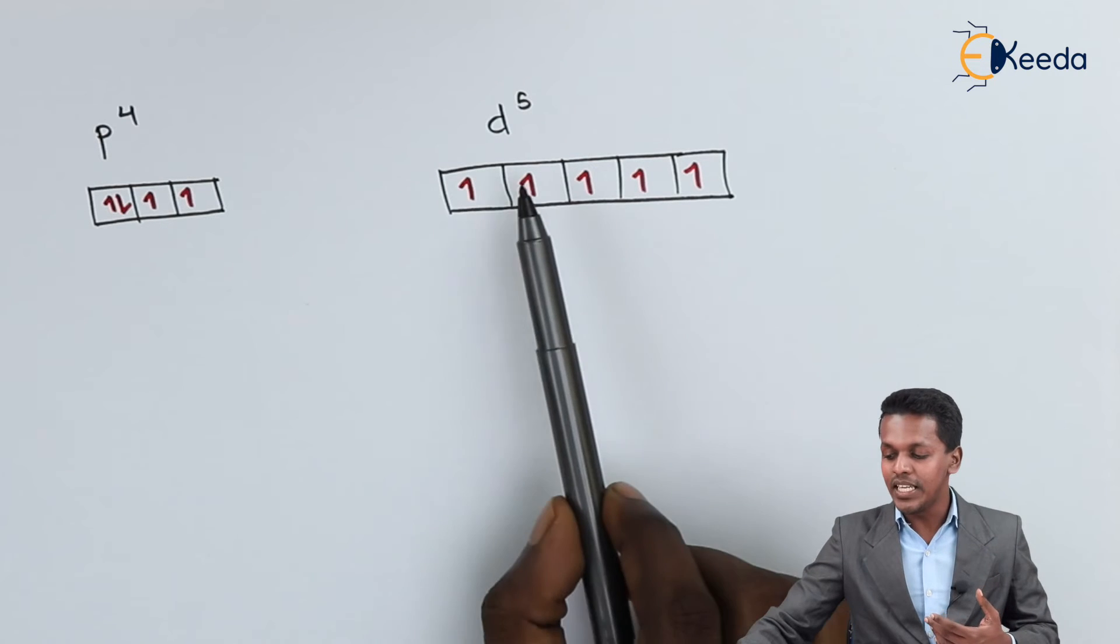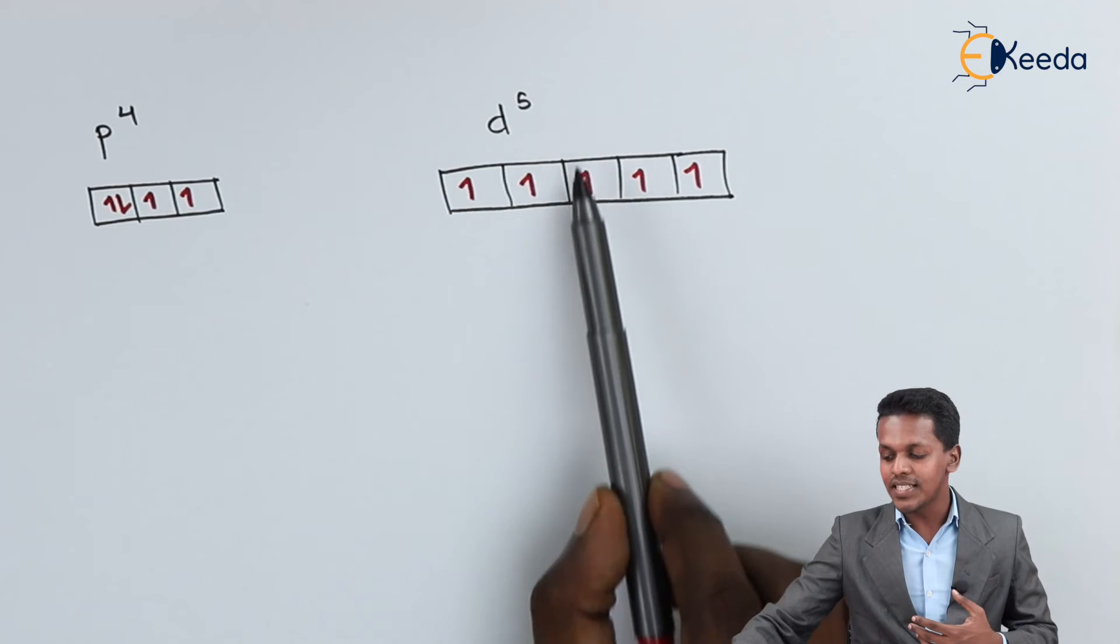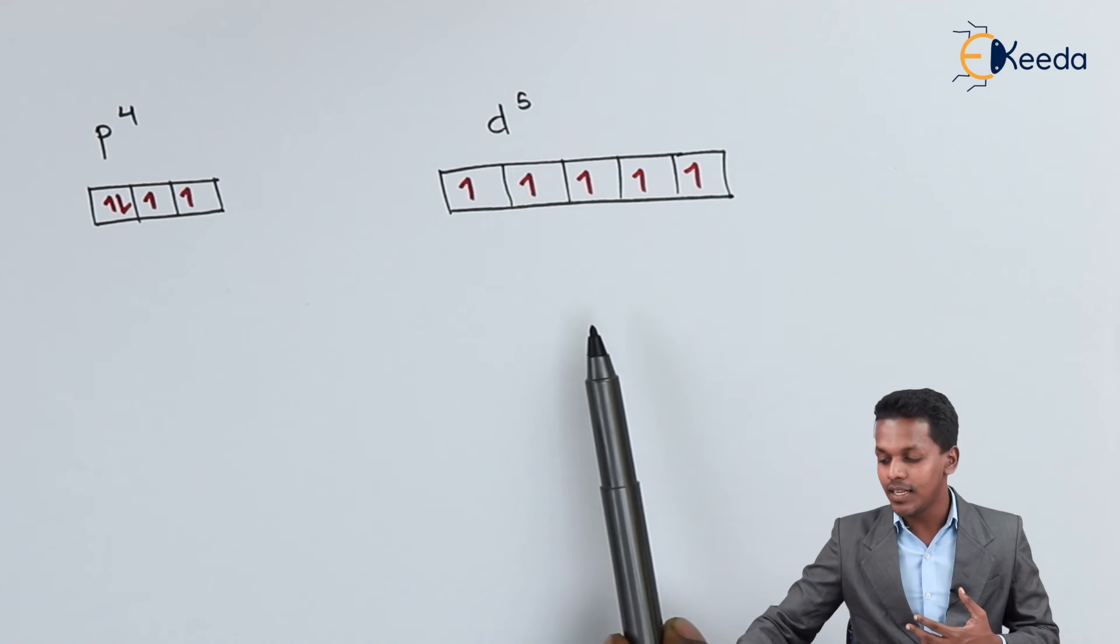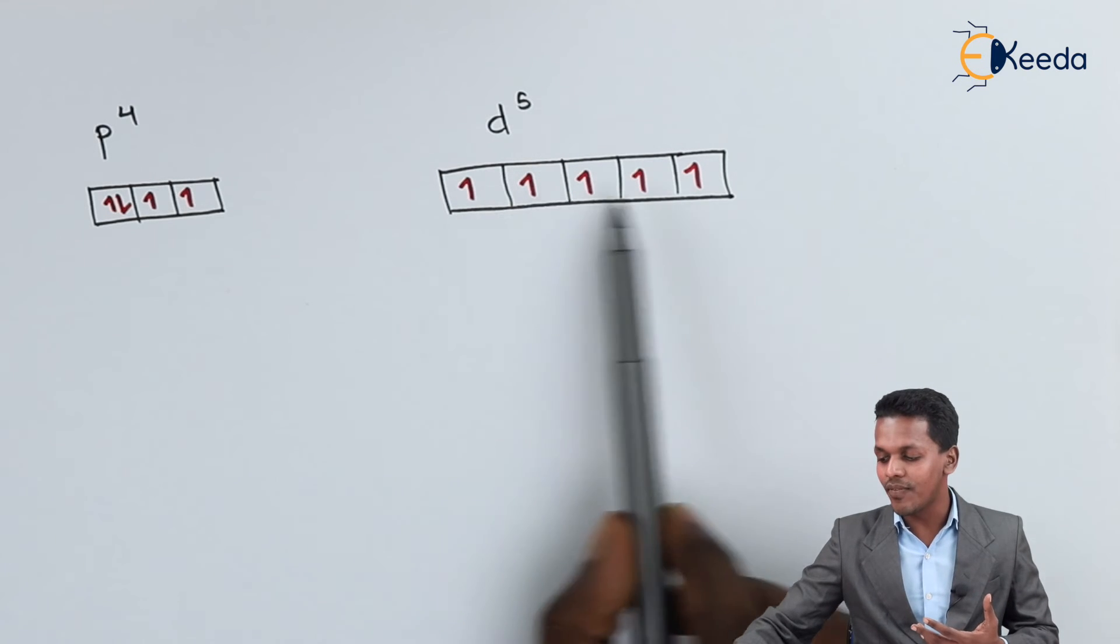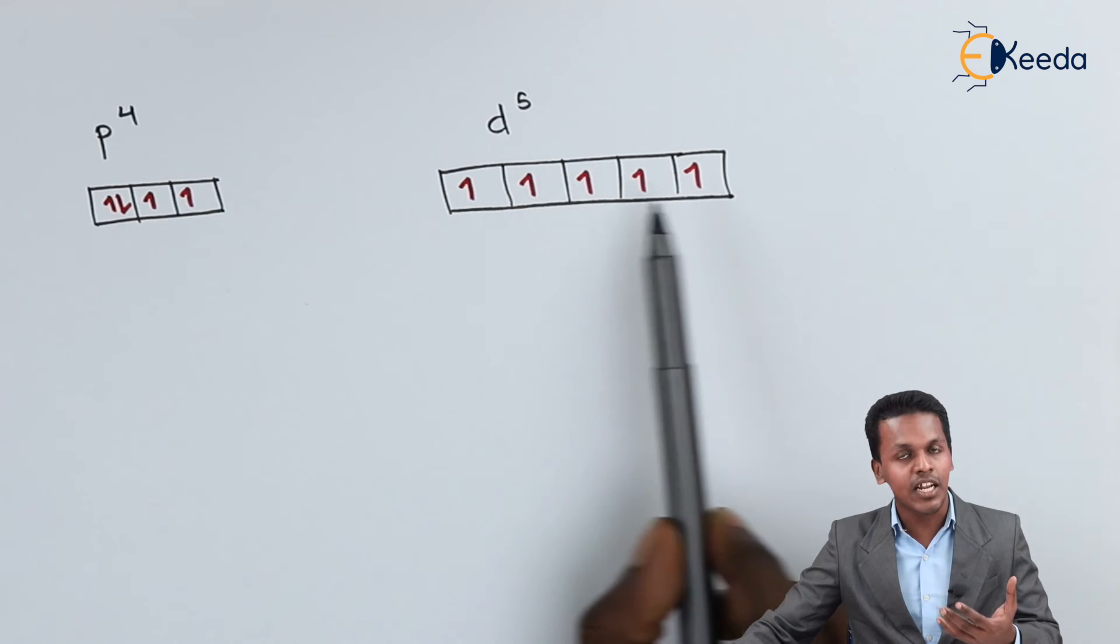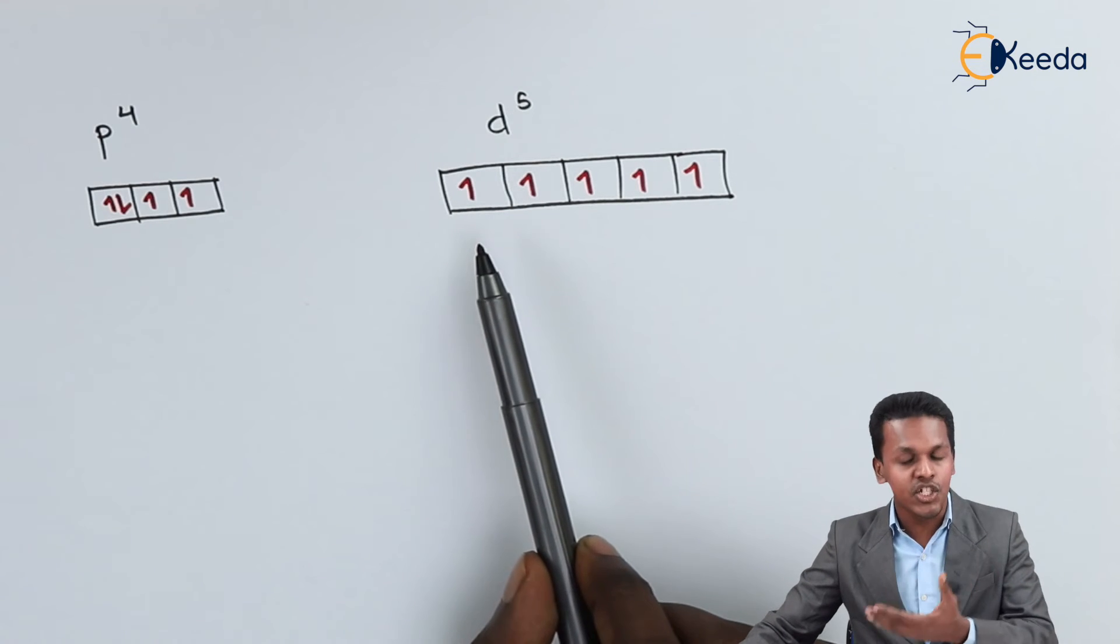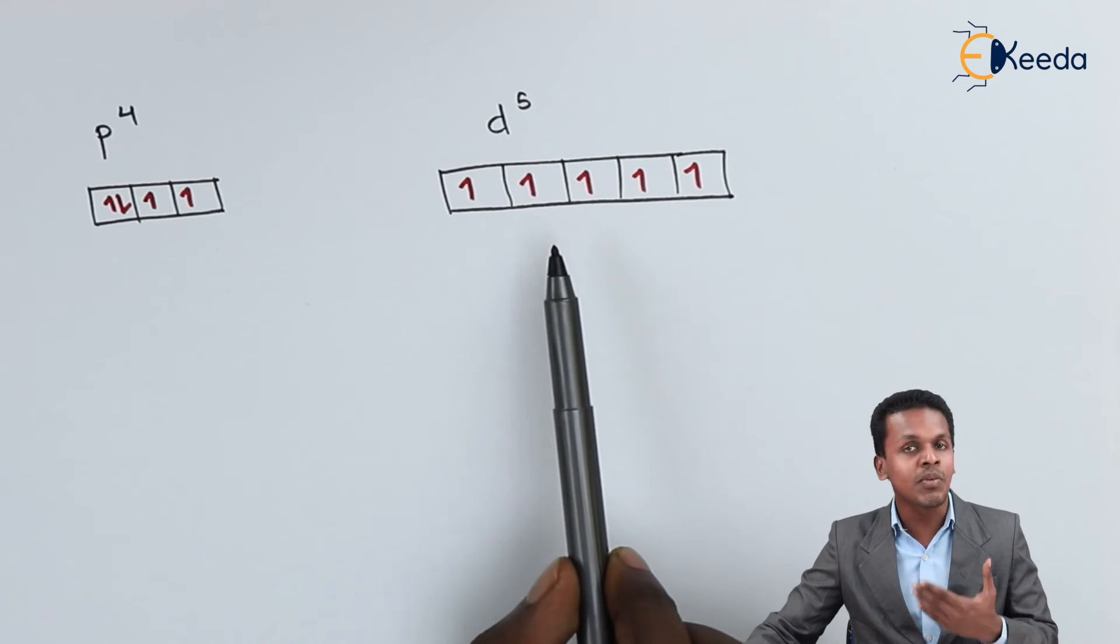So let me talk about d^5. The d^5 as we can see is a very symmetrical orbital. And we can find here that all the electrons that are being filled, they are symmetrically distributed. That is the reason this is very much stable.